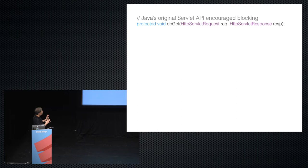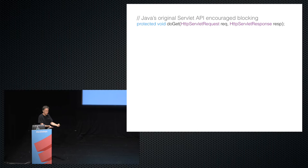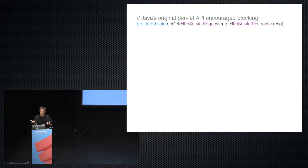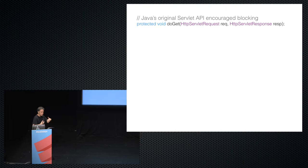To give an example of the problem: this is how you handle a request in Java Servlets from the 1990s. When a request comes in from a client browser, a method is invoked. You get a request object with information about the request and a response object that's like a wrapper around a socket. You interact with the client through the socket, and when the method returns, the request-response has finished. You don't return until it's finished — if you need to access a database, the thread has to block.